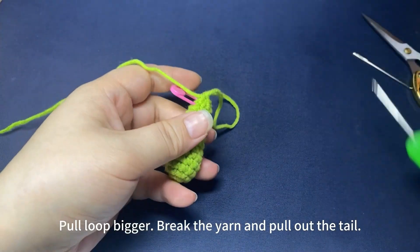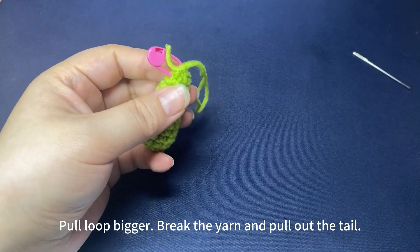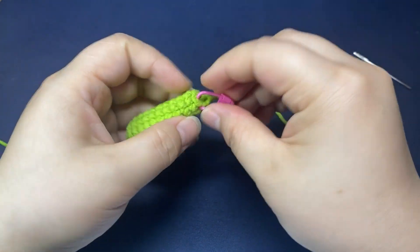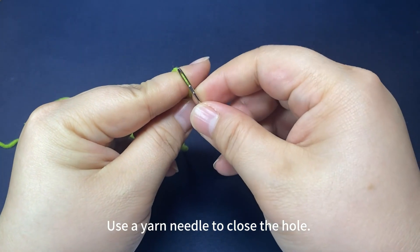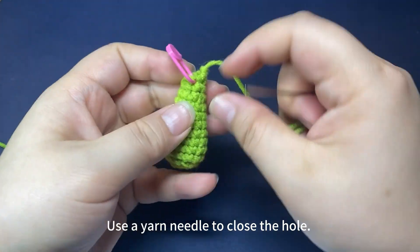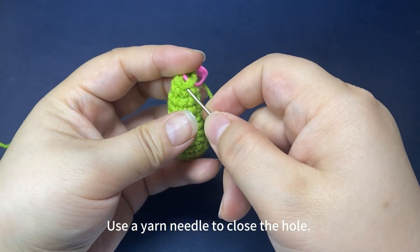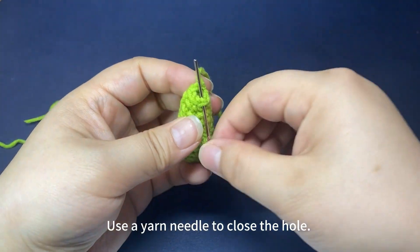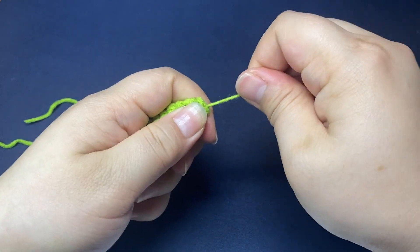Pull the loop bigger. Break yarn and leave a long yarn tail. Pull out the tail. Now use a yarn needle to close the hole. Hold the yarn tail tight to close.